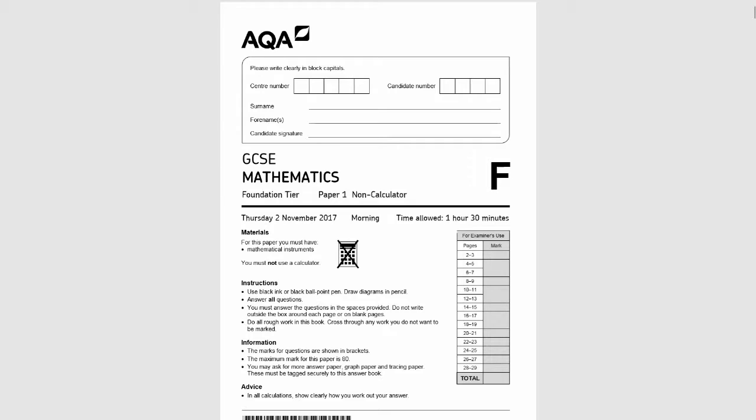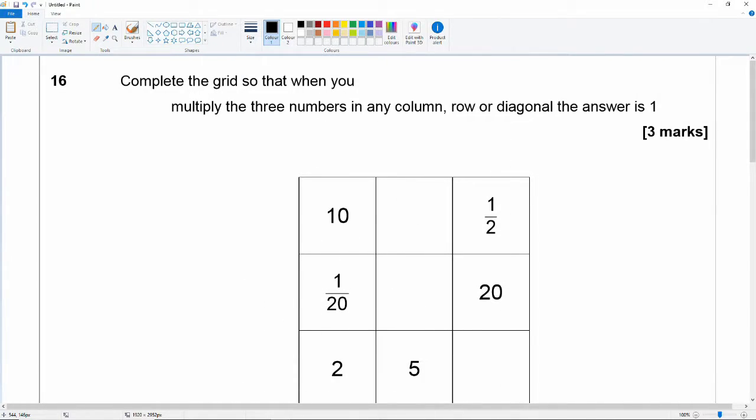It's a non-calculator paper and we're picking up in question 16 which reads complete the grid so that when you multiply the three numbers in any column row or diagonal the answer is 1. Okay well let's have a go at that.